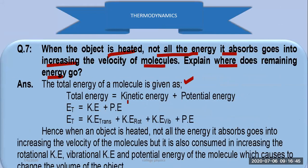The total energy of a molecule is given by kinetic energy plus potential energy — and all types of kinetic and potential energies. Kinetic energy includes translational, rotational, and vibrational kinetic energy of the molecule, plus the potential energy. So when an object is heated, not all the energy absorbed goes to increasing the velocity of the molecule.